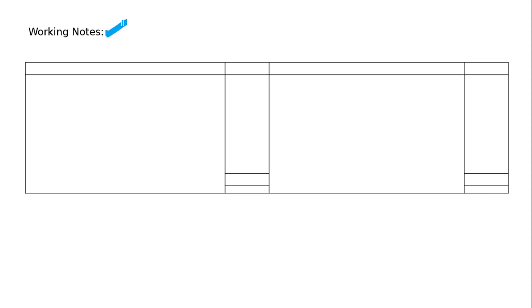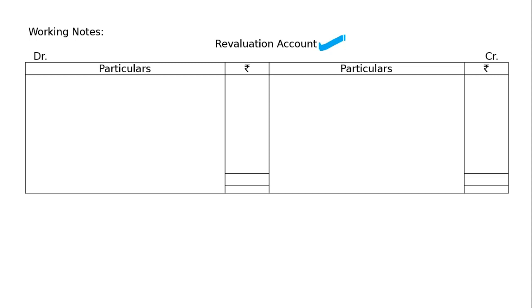Pass necessary journal entries to give effect to the above. We will be doing it in the working notes. Working notes: first of all, journal entry adjustment to give effect to Revaluation of Assets and Reassessment of Liabilities. This is the format of the Revaluation account — ledger format.